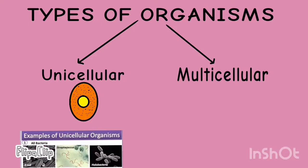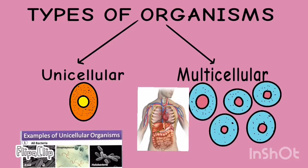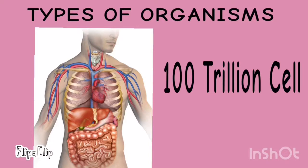Multicellular organisms are the ones that are made up of many cells. Examples are animals and humans. It is estimated that a fully grown human is made up of 100 trillion cells. That's a huge amount, right?